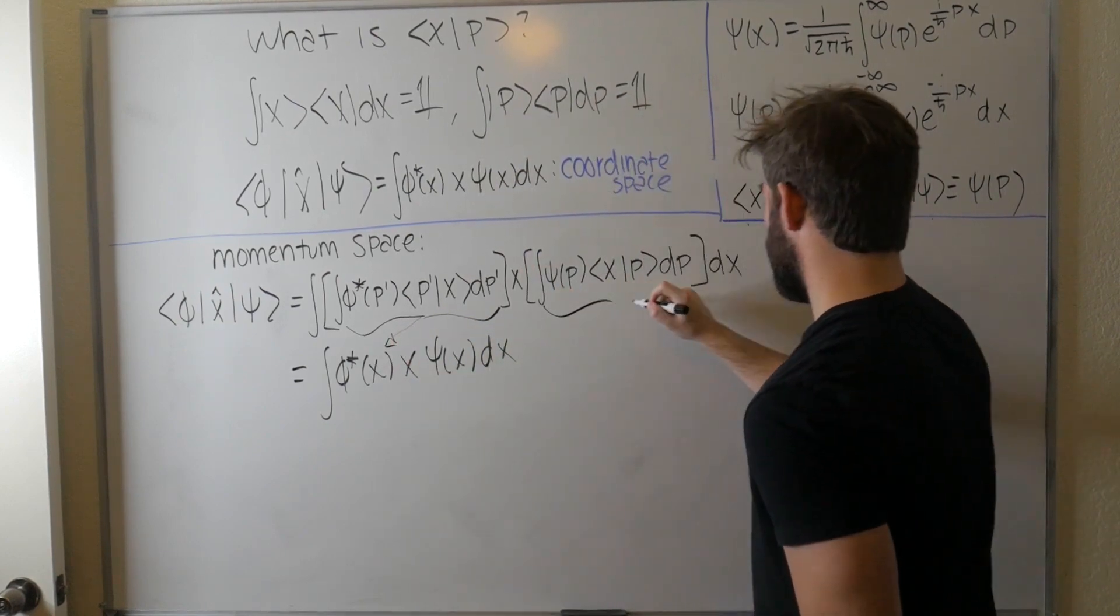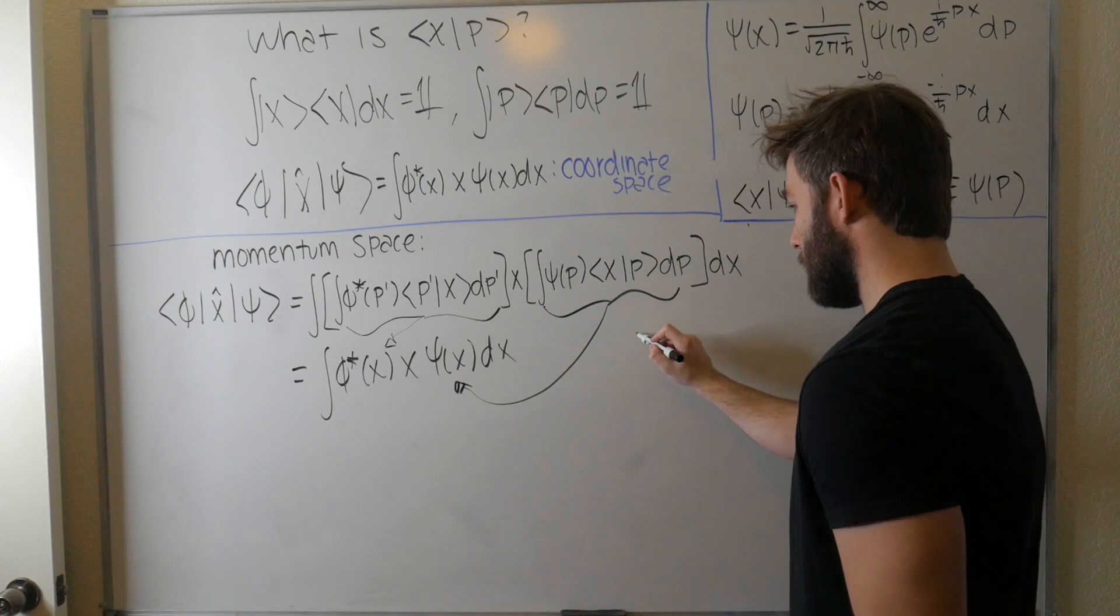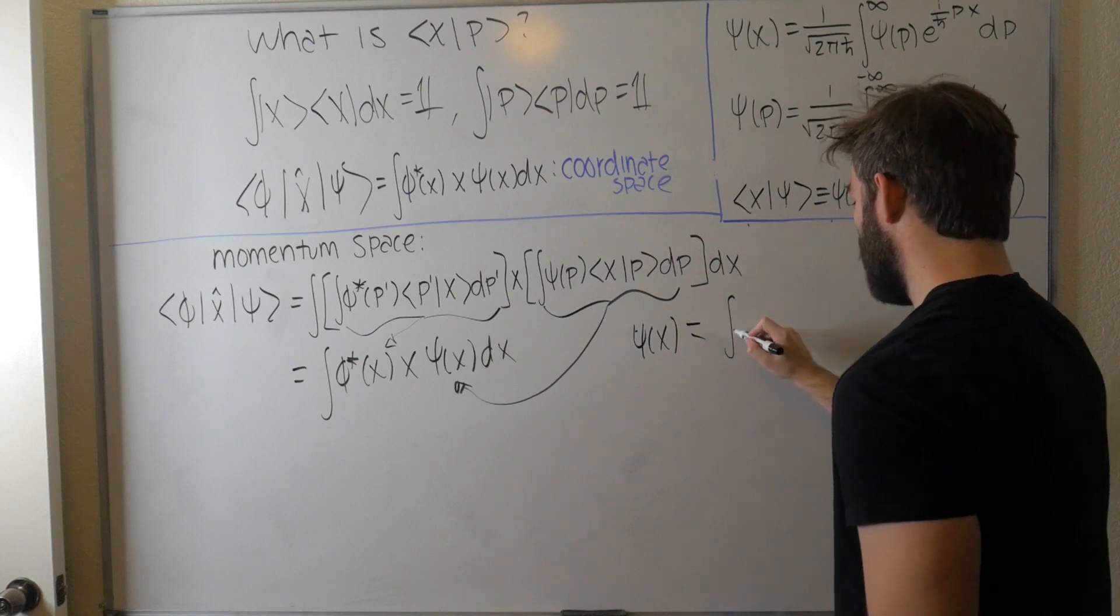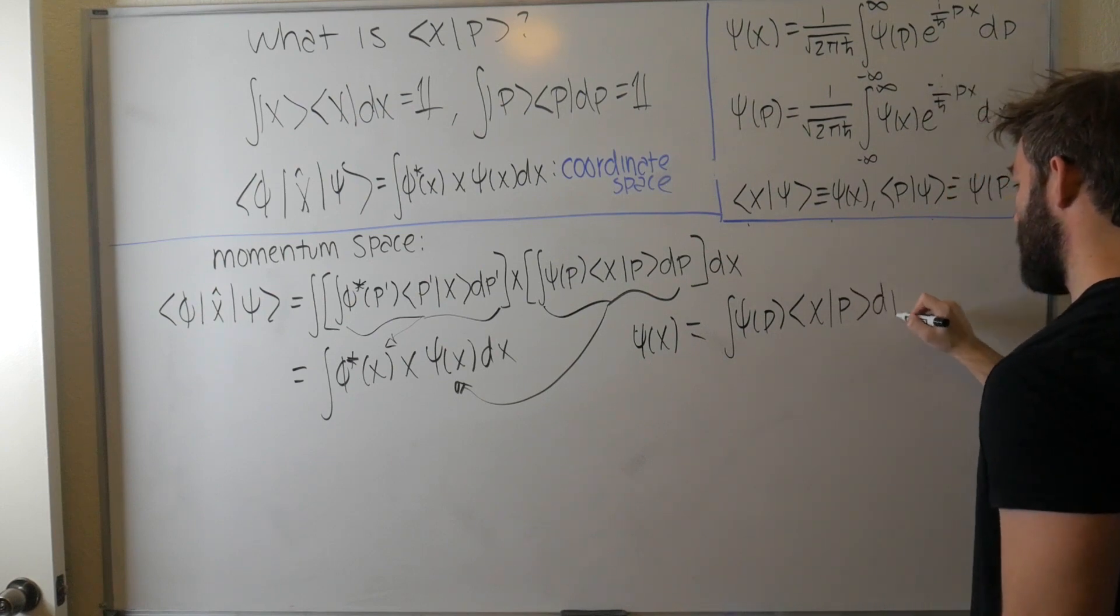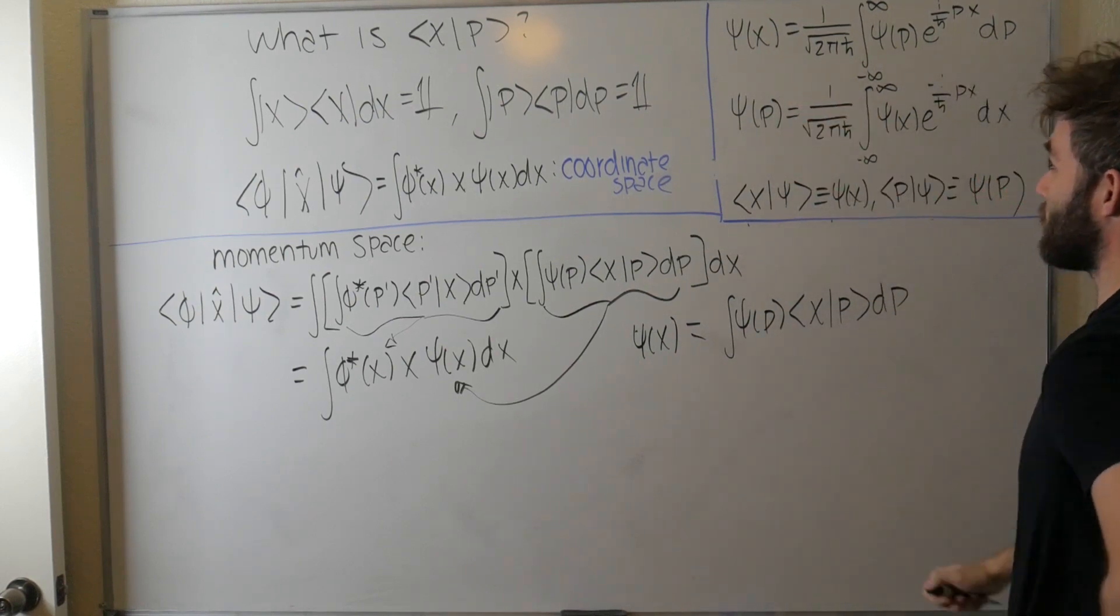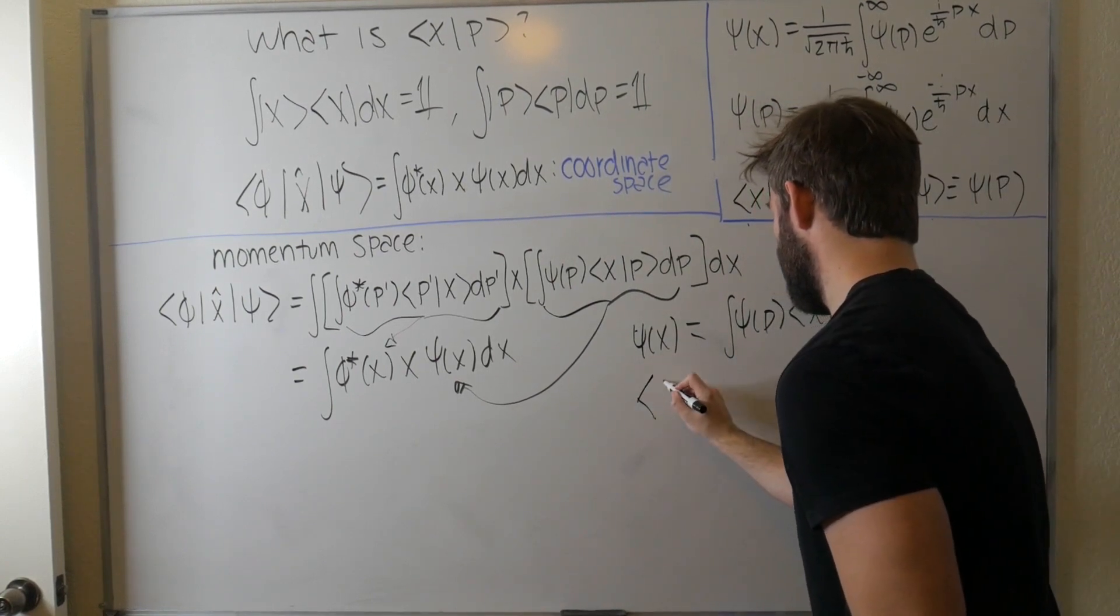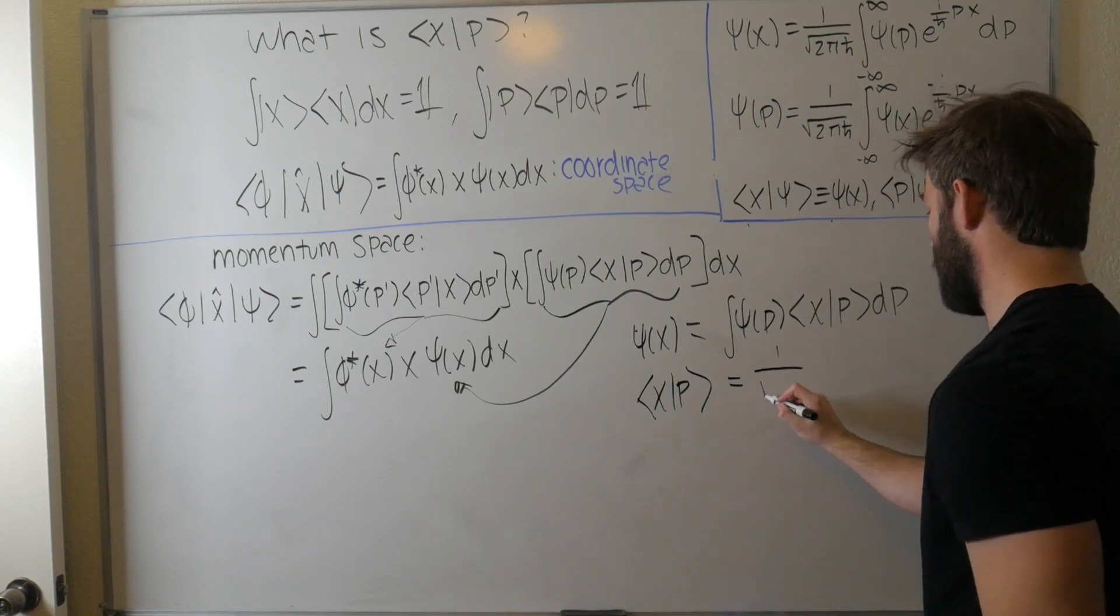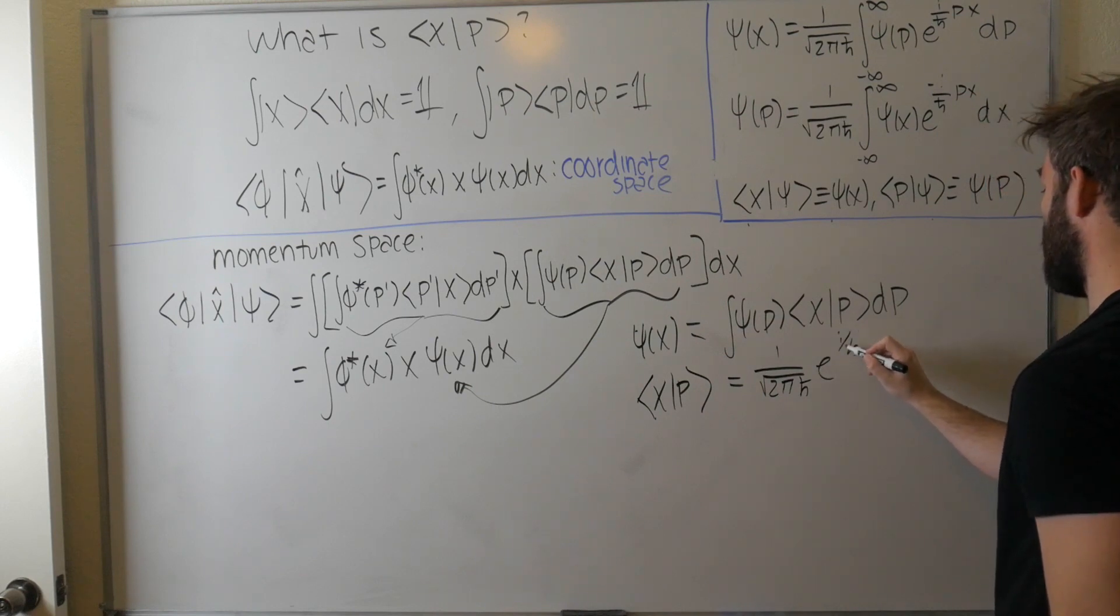In other words, psi of x is equal to the integral of psi of p, x p, dp. And that looks an awful lot like our Fourier transform up here. The only thing is that it requires that this x of p, or x times p, must be our transformation coefficient, which can be expressed as 1 over root 2 pi h bar times e to the i over h bar px. And there we have it, folks.